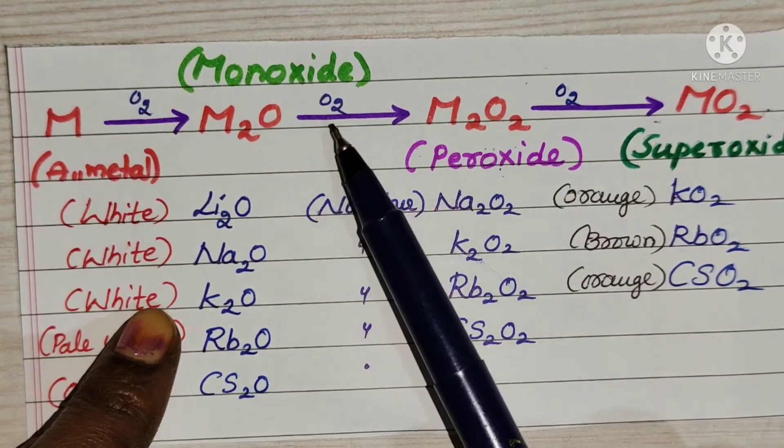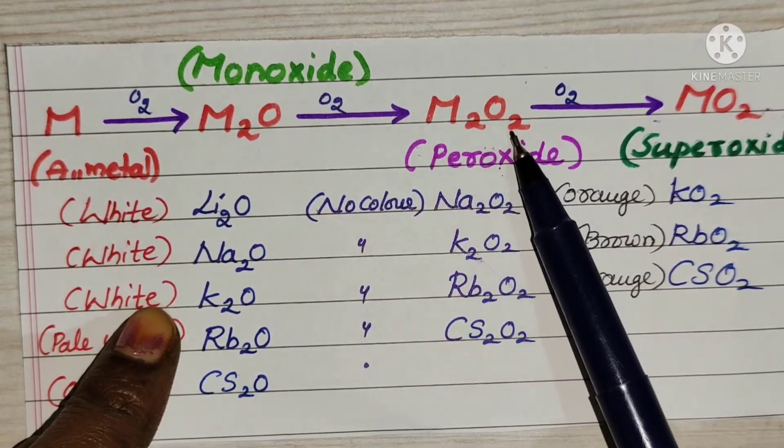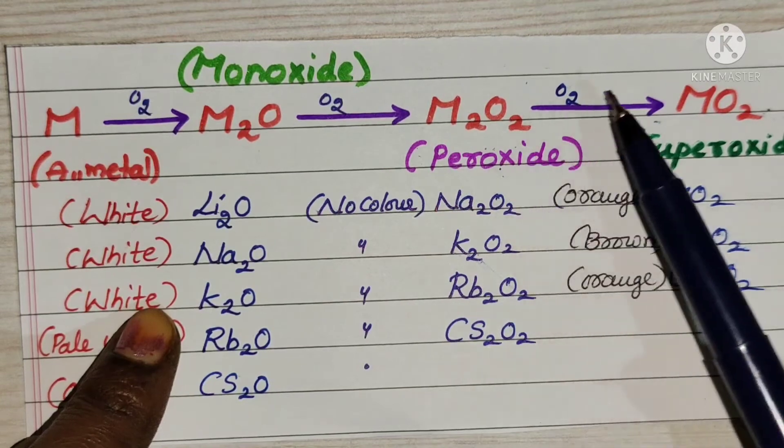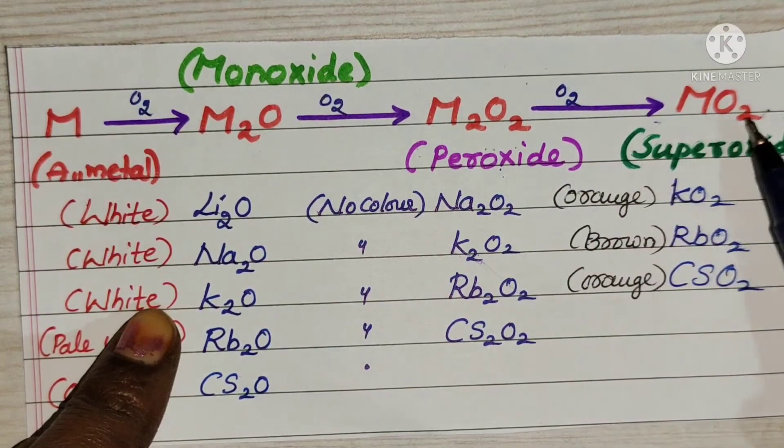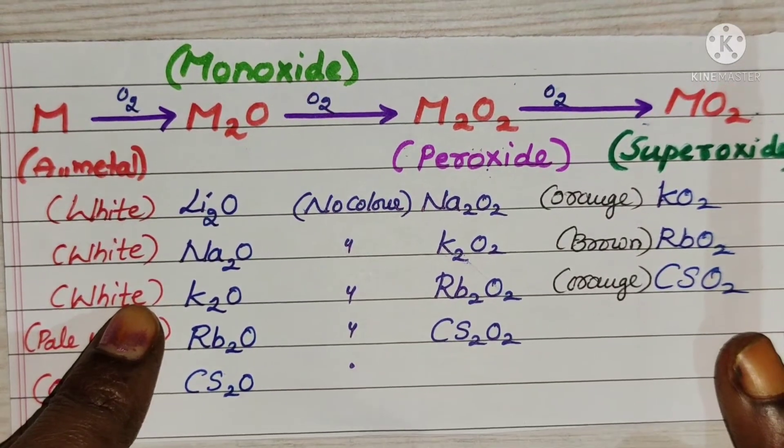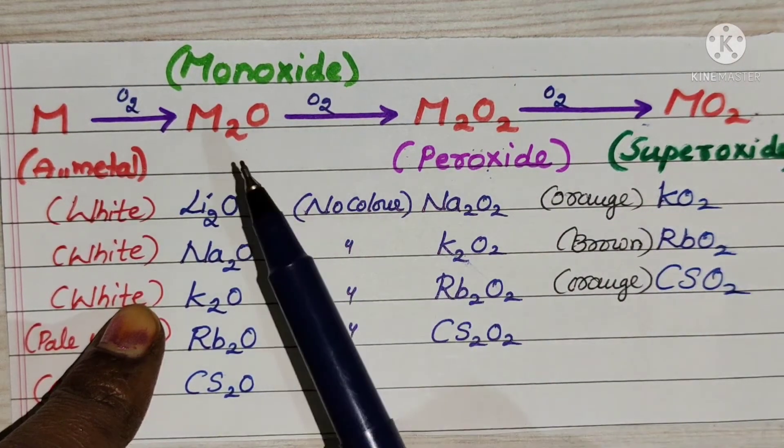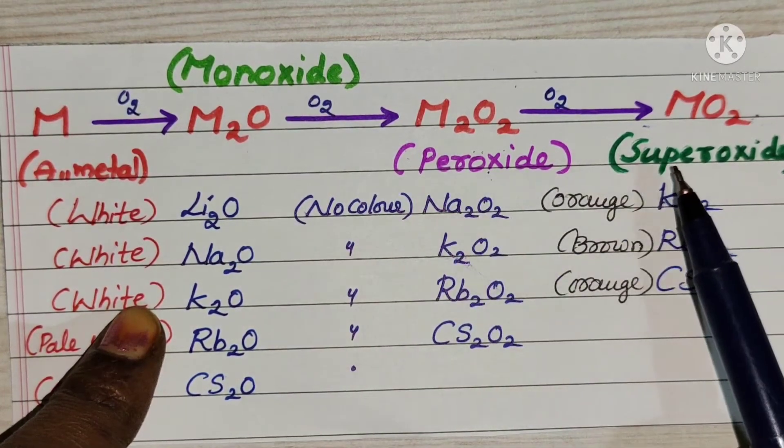Monoxide again reacts with oxygen and forms peroxide M2O2 formula. This peroxide again reacts with oxygen and forms MO2, which is superoxide. Simply, metal reaction with oxygen may give monoxide, peroxide, or superoxide.